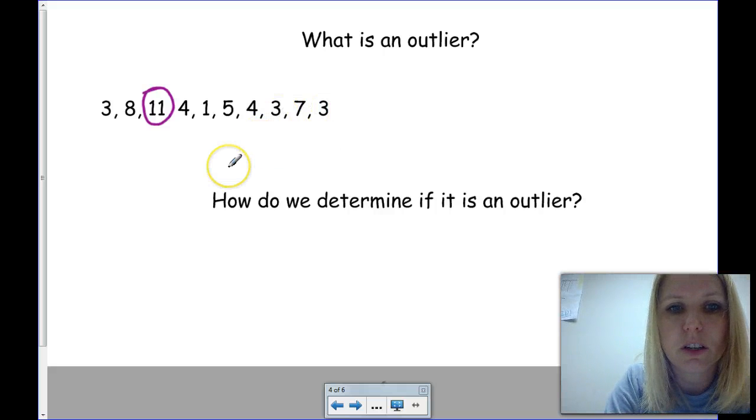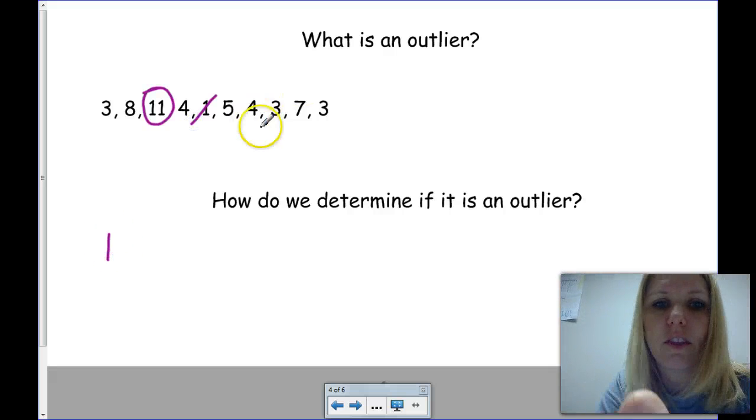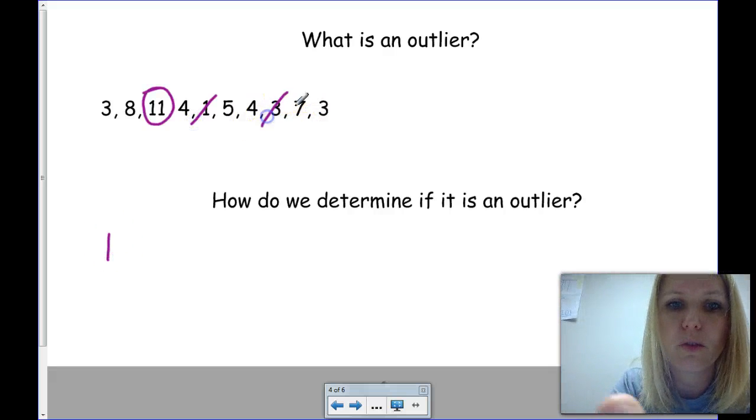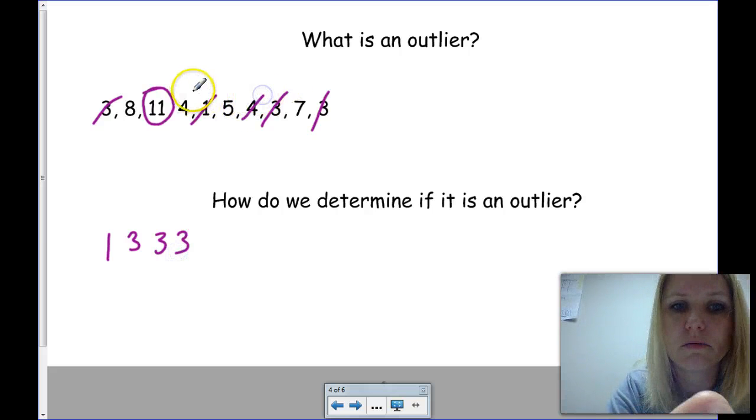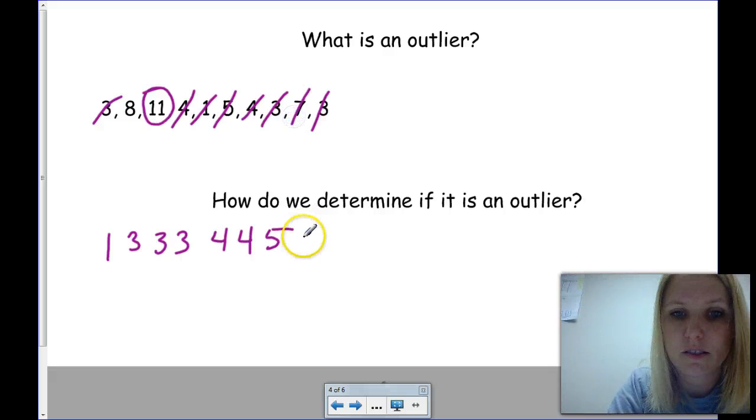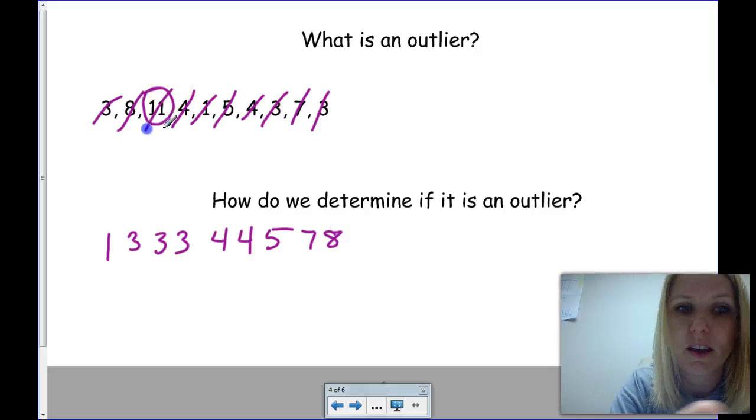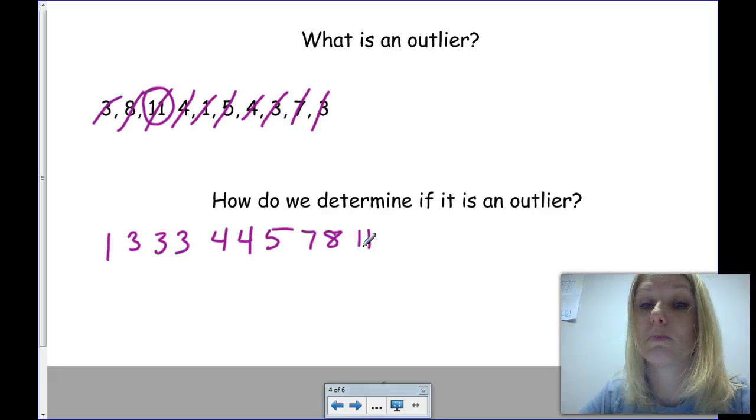So, our first numbers here that are smallest is the number 1. I'm going to cross that out and write it here. Then we have 1, 2, 3, 3's, 2, 4's, a 5, a 7, an 8, and finally the 11. So, now we've got them in order from smallest to largest.